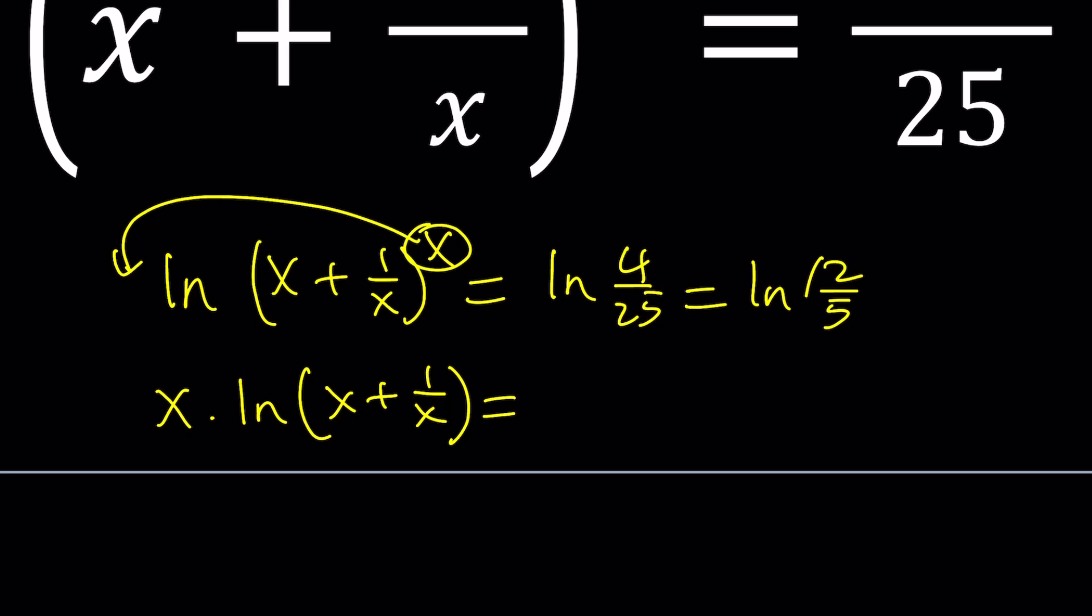And 4 over 25 can be written as 2 over 5 squared, and we can do the same thing for 2 over 5. So we have a one-to-one correspondence, sort of. So can I safely say that x is equal to 2 from here?